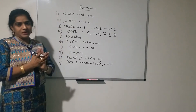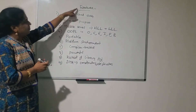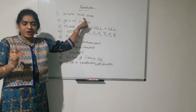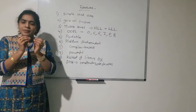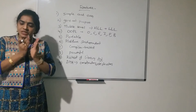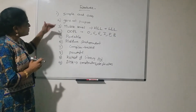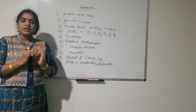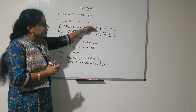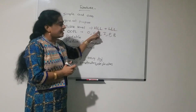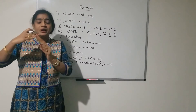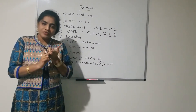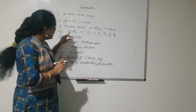So these are the main features of C++. To recap: C++ is simple and easy to understand — it contains simple English-like commands. It is a general purpose programming language. It is a middle level programming language, meaning it contains both high level and low level language features. Using high level language we develop application software, and low level languages are used to develop system software — so C++ can develop both.